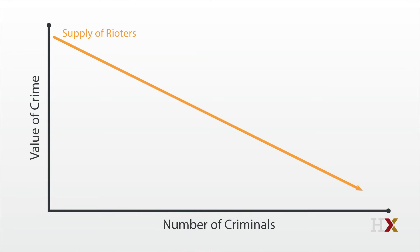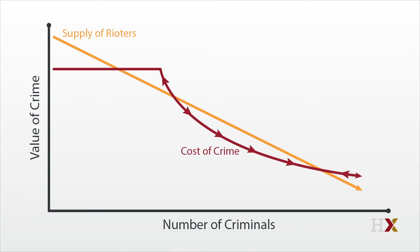But now let's switch into riot gear. In riots, where there are really a lot of people breaking the law at any one time, the probability of arrest starts falling and eventually goes to zero. We'll capture this by assuming that first the cost of crime is a horizontal line, just like before, but then the cost starts dropping precipitously because the police are just overwhelmed. Eventually, because the probability of arrest goes to zero, the cost asymptotes to zero.